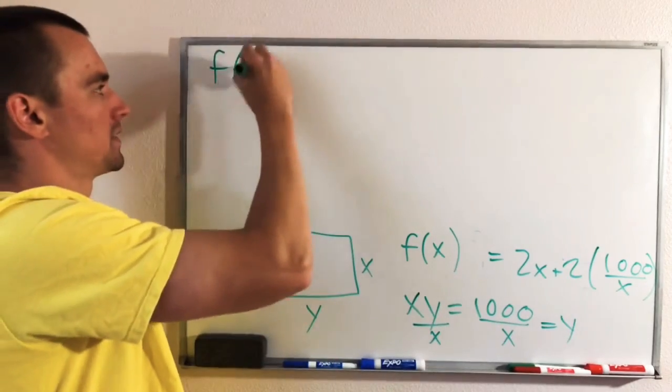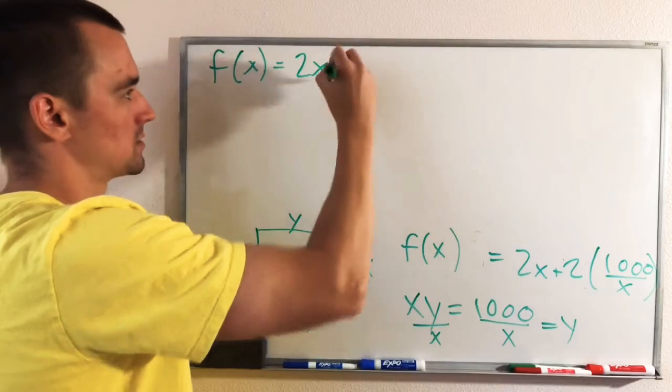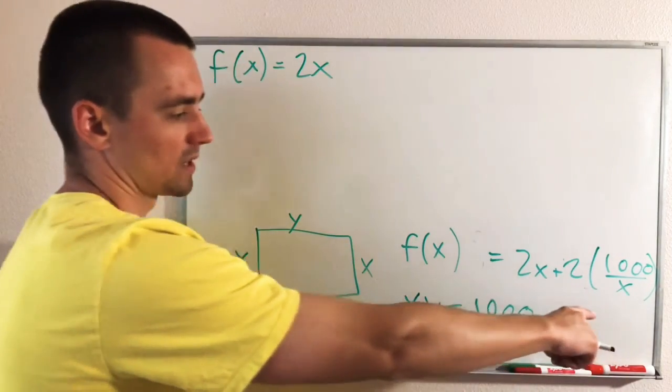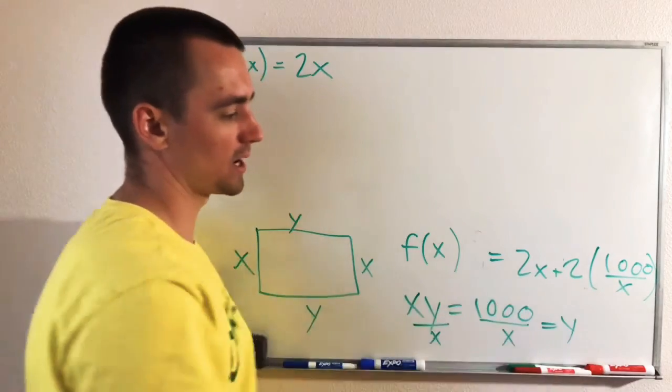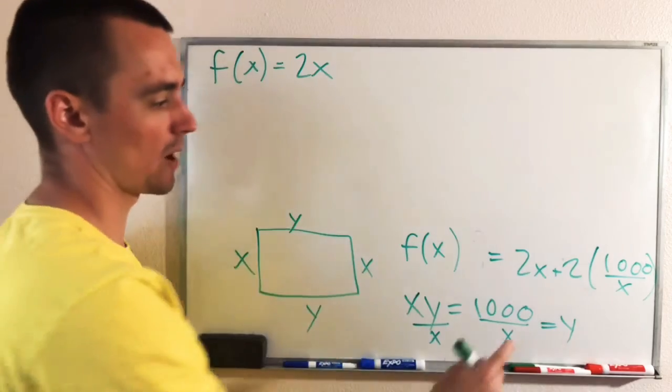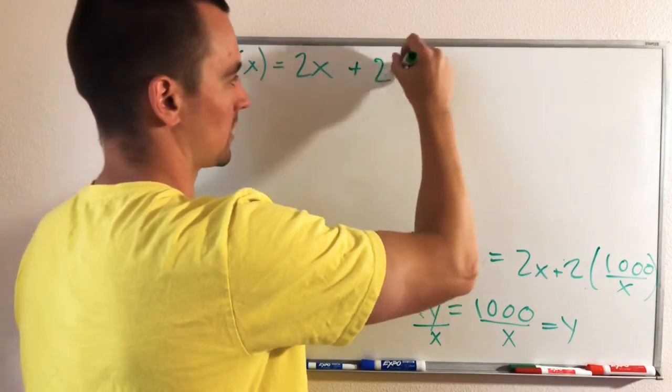Before we do that, though, I'm just going to rewrite this function to be a little bit simpler to deal with. So obviously the 2X is fine, but this piece here, what we can do instead of saying something divided by X, we can bring our X up to the numerator and make it to the negative first power. So 2 times 1,000 would give us 2,000. And then we have times X to the negative first instead of divided by X.